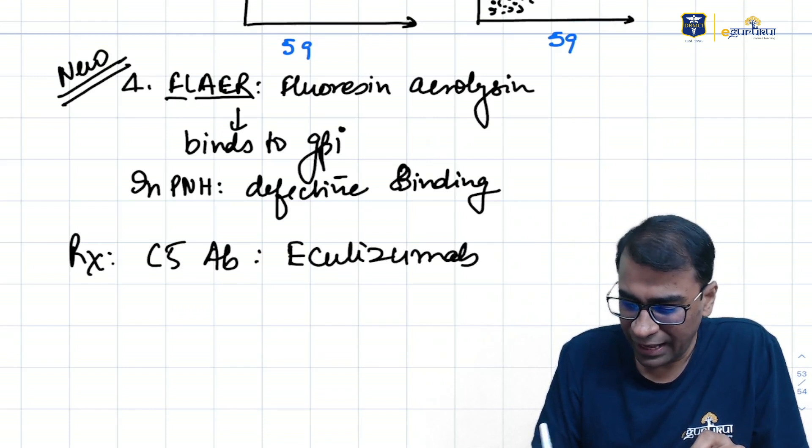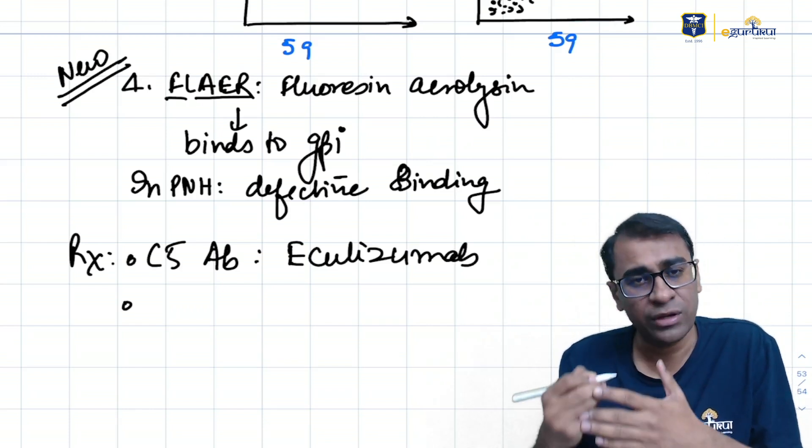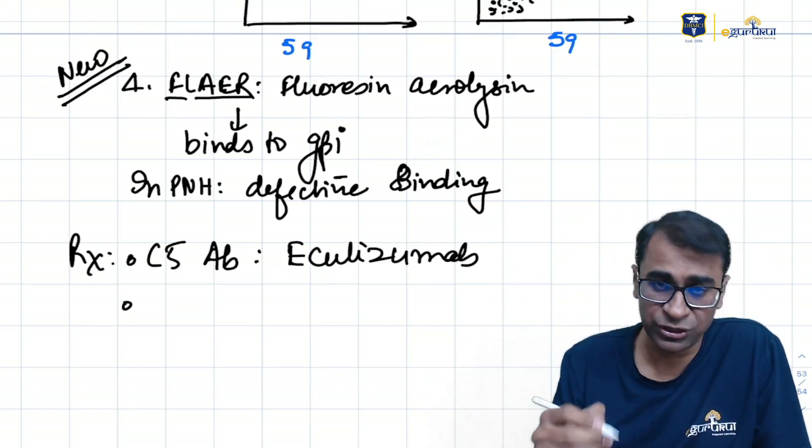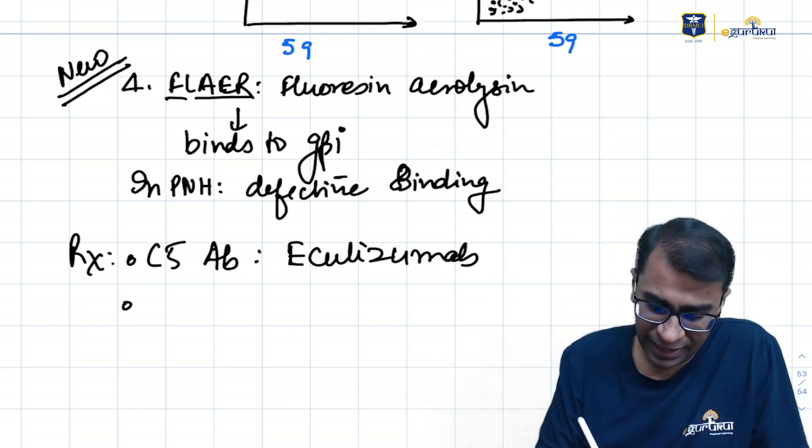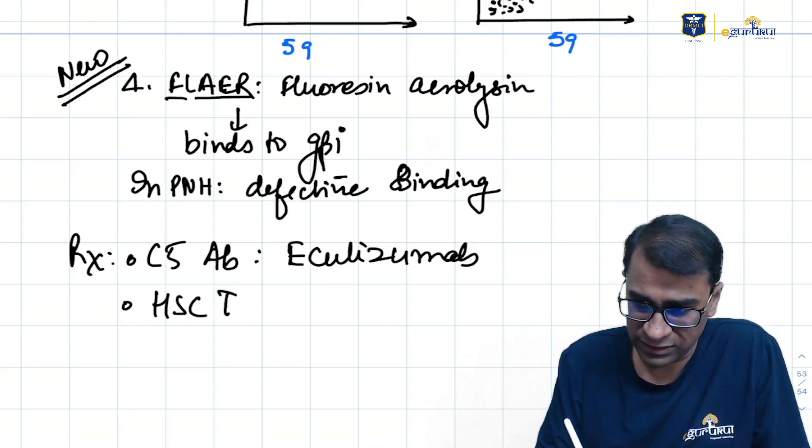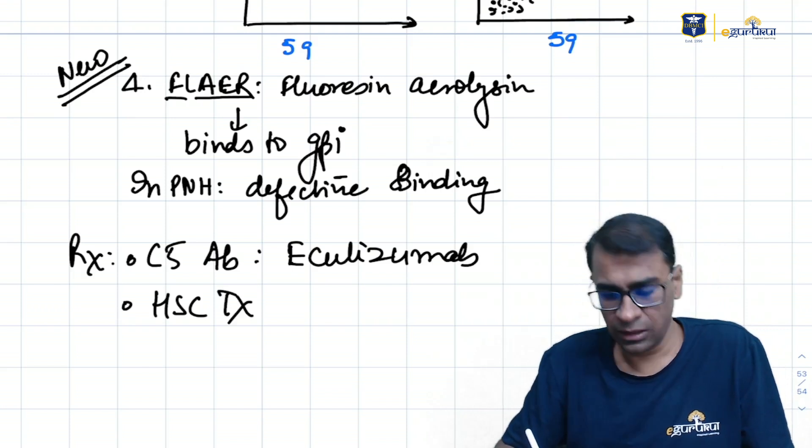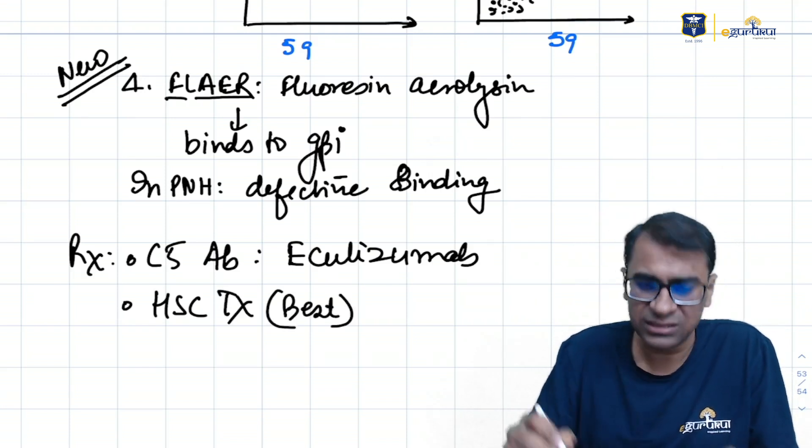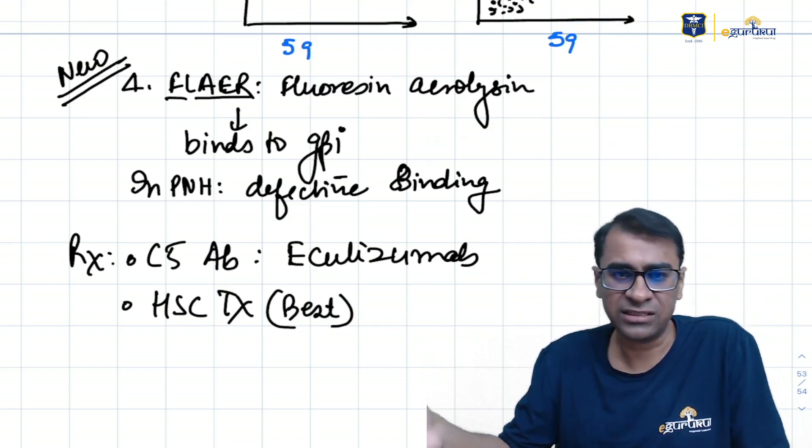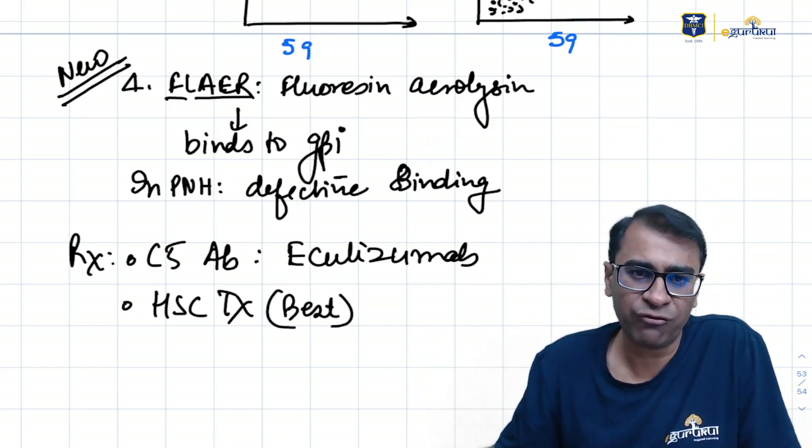Eculizumab. And just like everything else, because it's a mutation disease, you can go for hematopoietic stem cell transplantation. So this is the best therapy. But to decrease the episode of PNH lysis, you can give antibody of complement, C5 complement antibody.